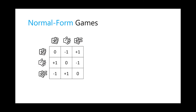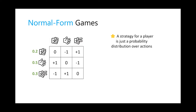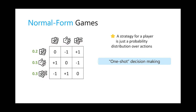One-shot interactions in the game theory literature are called normal form games — fundamentally, games like rock paper scissors. Every player plays exactly once, picking an action from a finite set, and after all players have picked an action a payoff is revealed that depends on the actions selected. A strategy in a normal form game is just a probability distribution over actions — for example, rock 20%, paper 50%, scissors 30%.